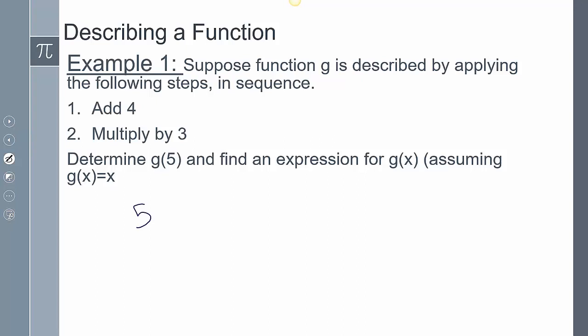So we start with 5 because g of x equals x. So if I plug in 5 I know that that's going to be 5. The first thing it's asking me to do is add 4. Then once I add 4 it then wants me to multiply everything by 3. And so simplifying that together I get 27.